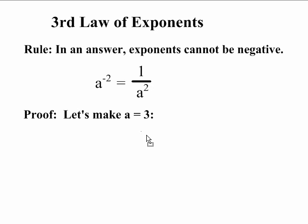Let's prove this. What if we make a equal to 3? 3 to the negative 2 must be equal to 1 over 3 squared by the third law of exponents. Let's use our calculator to find out what 3 to the negative 2 is equal to.